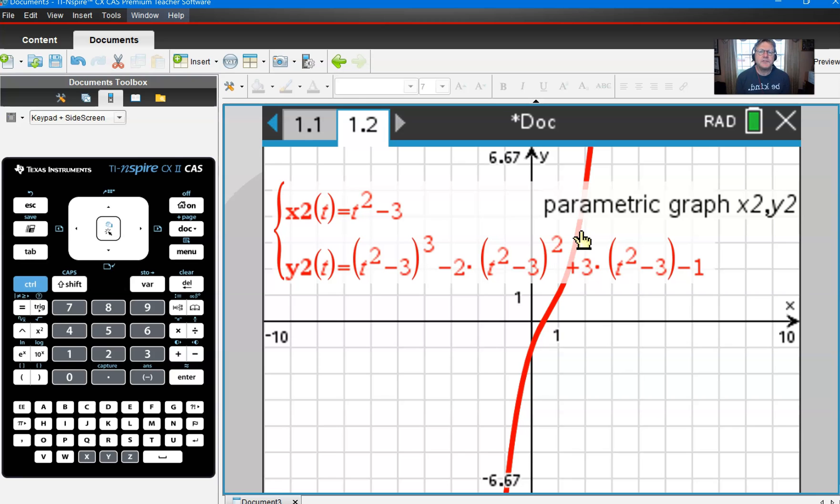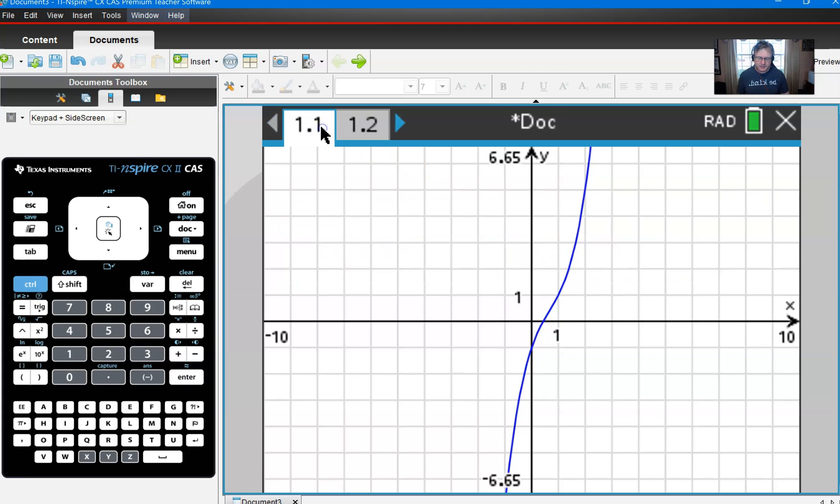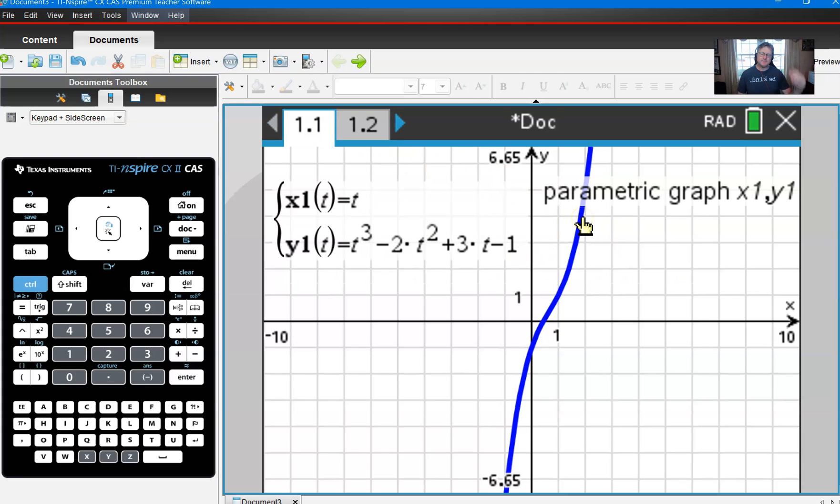For whatever reason, I decided to use the parameter t squared minus 3. A little bit different than t, of course, but notice if that t squared minus 3 is used in each of those x positions of that y equation, we're going to get the same exact curve as if we had just used plain old t. And that's why it's a little bit easier sometimes to use that simplest parameter possible.